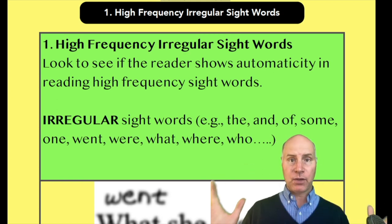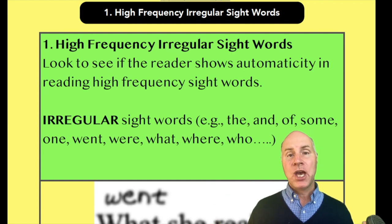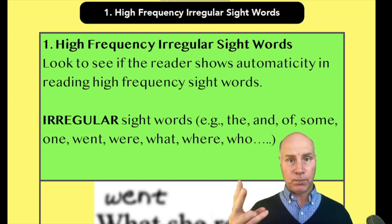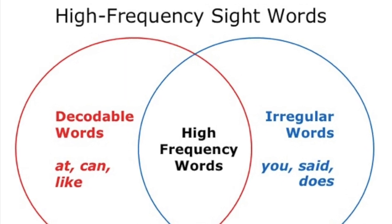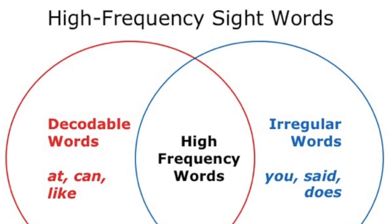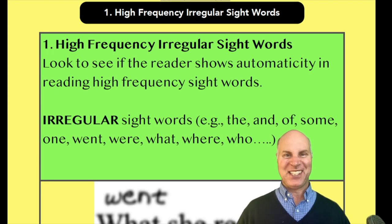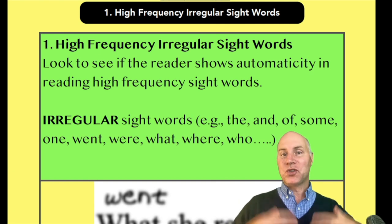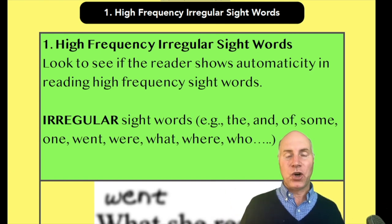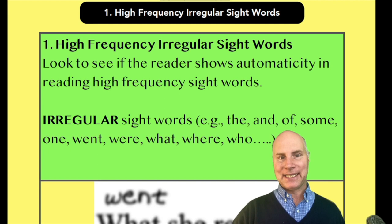Within this set of high-frequency words that we want students to recognize right away, we have two groups. One group is regular words and the other is irregular — and that's the group we're going to look at now. Regular words are ones you can use phonics to decode, like 'cat,' which is a CVC word. Irregular high-frequency words, you can't decode with phonics.